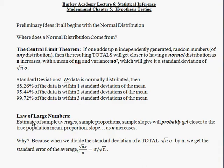The law of large numbers says that if we take a sample of data and we estimate a sample average, or a sample proportion, or a sample slope, or a sample variance, then the sample estimate will probably — not definitely, but probably — get closer to the true value of the thing we're estimating: the true population mean, population proportion, the real slope of the relationship, as the sample size increases. Basically, larger sample size makes our estimates more accurate.